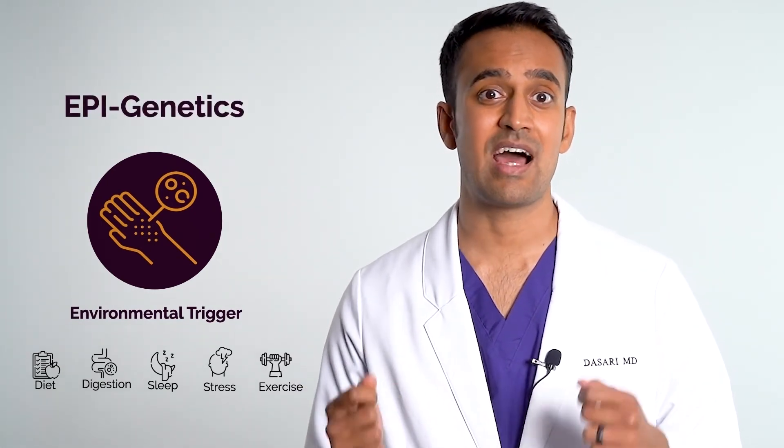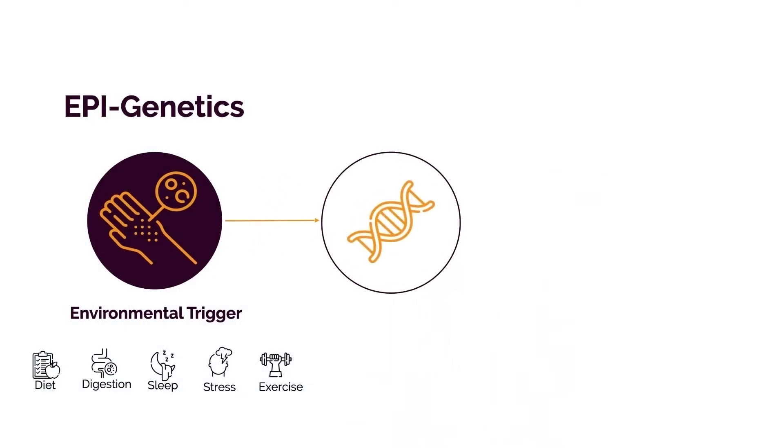And those triggers are diet, digestion, sleep, stress, and exercise — the Big Five. These environmental triggers are collectively referred to as epigenetics. The prefix 'epi' denotes a higher position because epigenetics control genetics. In reality, it's epigenetics — not genetics — that really matters, because these are all things within our control that can directly impact how much inflammation we have in our body. This approach is designed to leverage these five key elements and maximize them in order to heal the body.